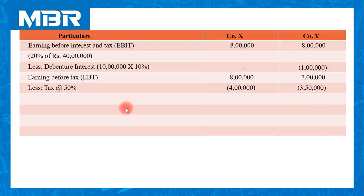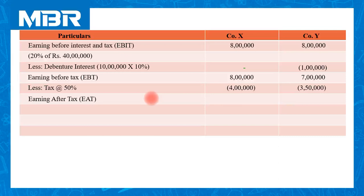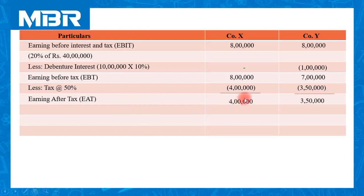After payment of tax, whatever profit remains with the company is known as EAT — Earning After Tax — or PAT (Profit After Tax), sometimes also called EAIT (Earnings After Interest and Tax) or PAIT (Profit After Interest and Tax). Ultimately the interpretation is the same; only the words differ. Profit After Tax for company X is Rs. 4 lakhs and for company Y is Rs. 3,50,000.